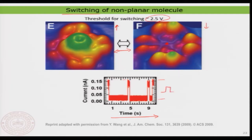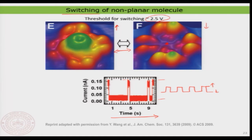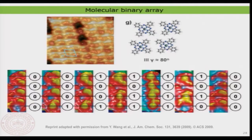You can now control this switching. You need a threshold voltage — if you have that threshold voltage, you can push the tin through the molecule downward and pick the tin backward, basically switching them up and down. That is something very interesting. Can we do something more interesting than just manipulating? Yes, we can.